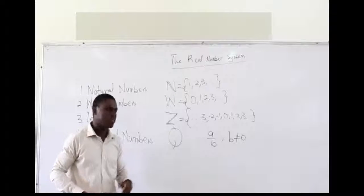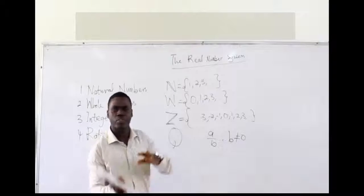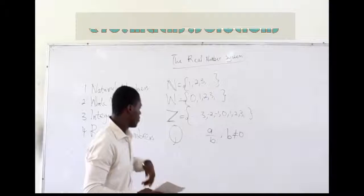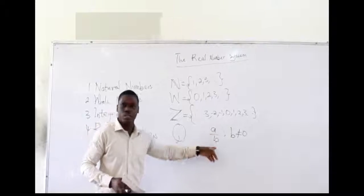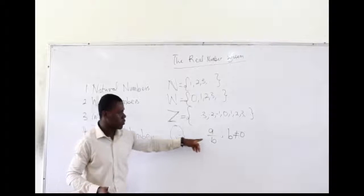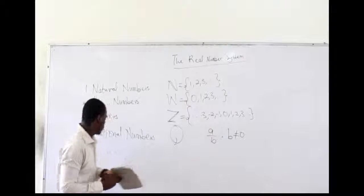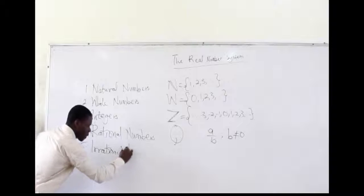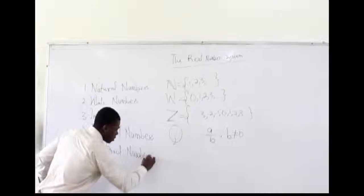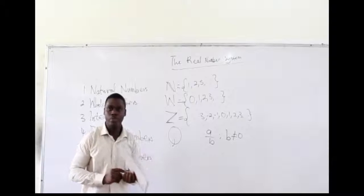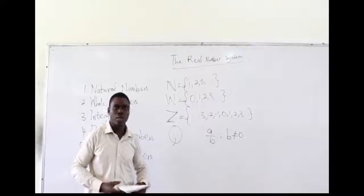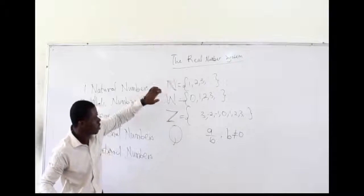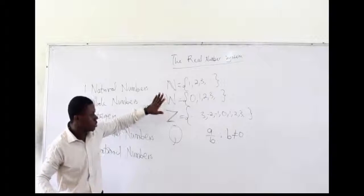These things were okay, until we realized that if we have rational numbers, it could be possible that we also have irrational numbers — the direct opposite of rational numbers. Whereas rational numbers can be written in the form A over B, irrational numbers cannot be written in the form A over B.